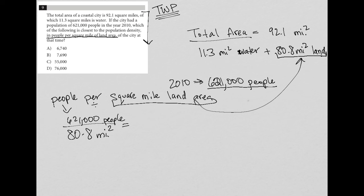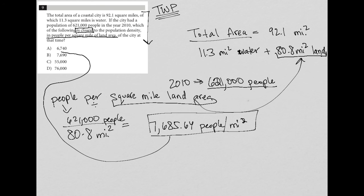And what I get is 7,685.64 people per square mile land area. Then I look at the answer choices. The question does say which of the following is closest, so we're not looking for an exact number. Therefore, the correct answer here must be choice B at 7,690.